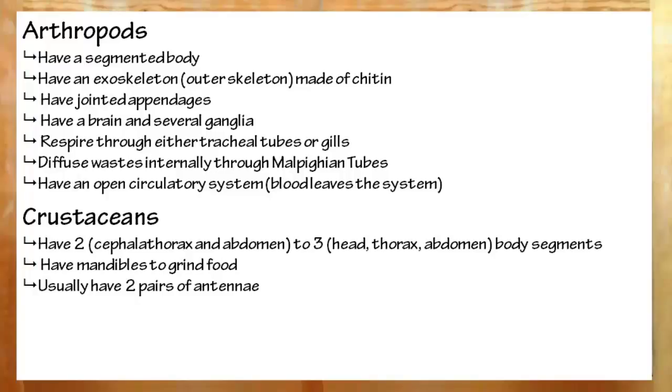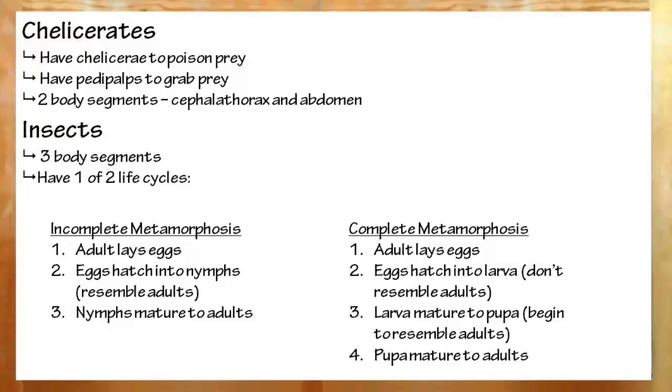Groups of arthropods. First off, crustaceans. Think shellfish, crabs, and lobsters. They have these things called mandibles, which will help crush up food. They also have two to three body parts. Chelicerates. Think spiders, horseshoe crabs, scorpions. They have chelicerae, structures used to poison their prey, and pedipalps, structures used to grab their prey.